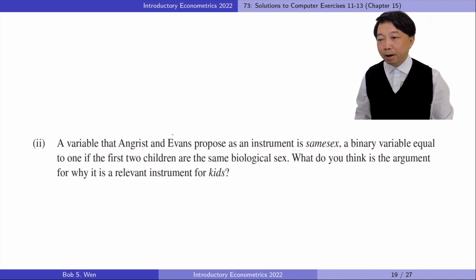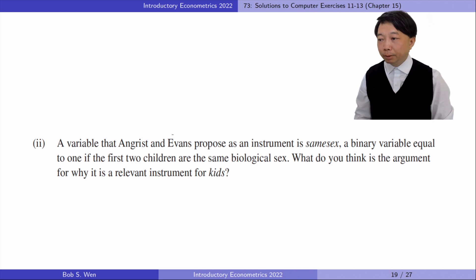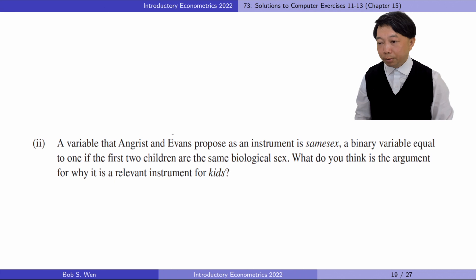In part 2, the variable proposed as an instrumental variable is 'same sex' — a binary variable equal to 1 if the first two children are of the same biological sex. What is the argument for why it is a relevant instrument for kids? Assuming that parents prefer to have a son and a daughter, if their first two children are of the same gender, they are likely to have more children than couples whose first two kids are of opposite biological sex. So the instrumental variable should be positively related to the number of kids, which can be verified in the first stage regression.